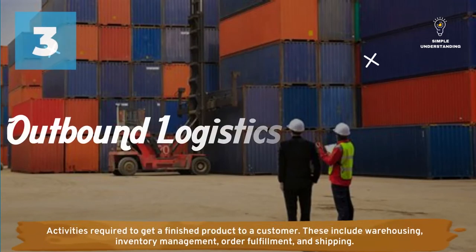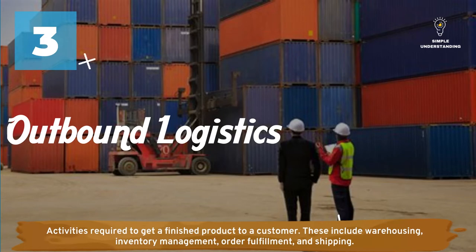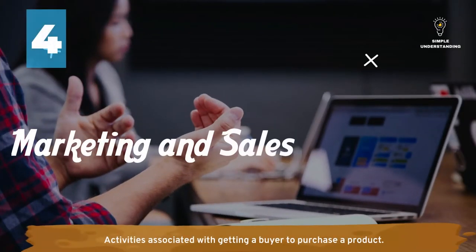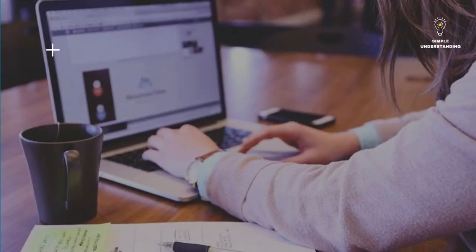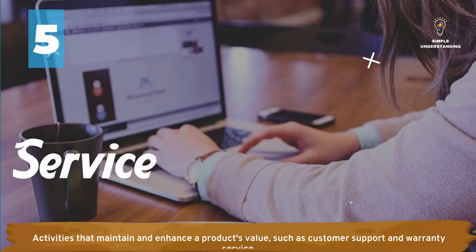Number three, outbound logistics — activities required to get a finished product to a customer, including warehousing, inventory management, order fulfillment, and shipping. Number four, marketing and sales — activities associated with getting a buyer to purchase a product. Number five, service — activities that maintain and enhance a product's value, such as customer support and warranty service.